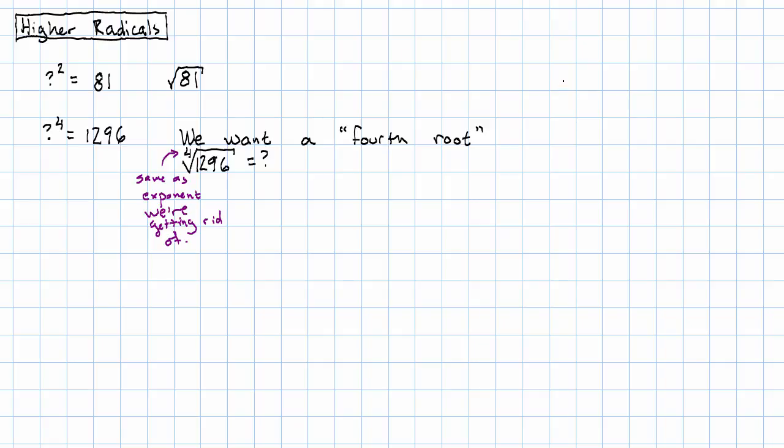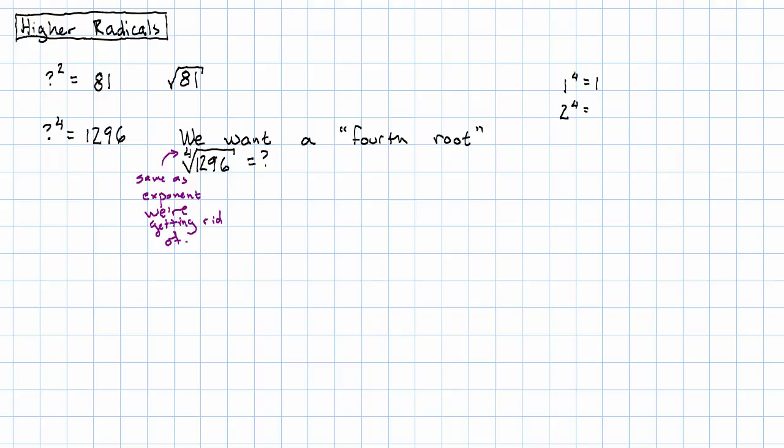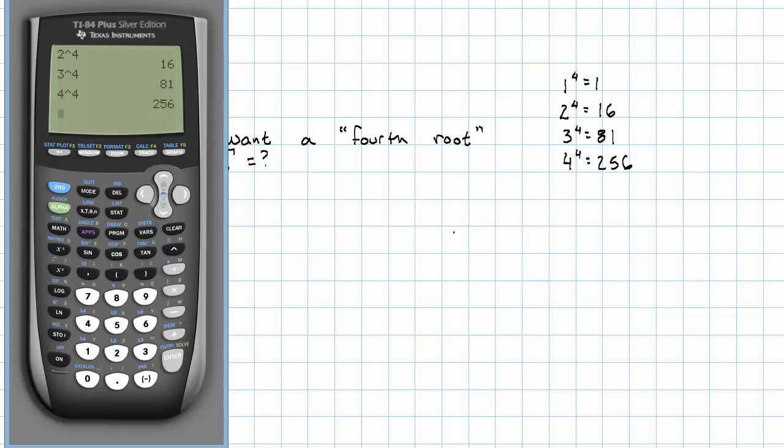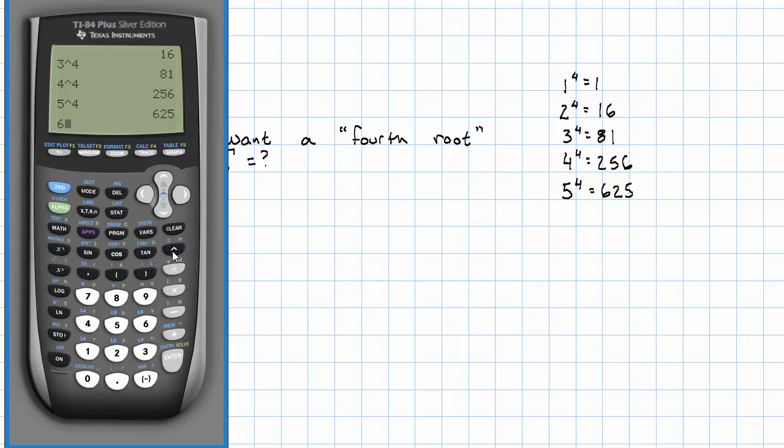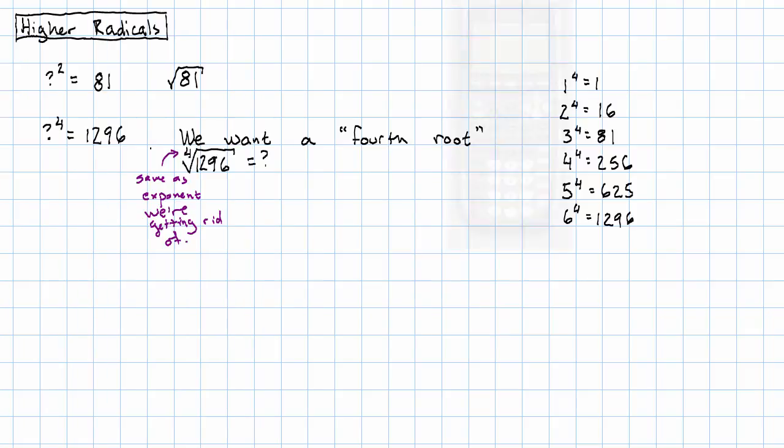We can do this by trial and error. One to the fourth power is one. Two to the fourth power is 16. Three to the fourth power is 81. Four to the fourth power is 256. Five to the fourth power is 625. Six to the fourth power, oh, there it is.